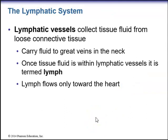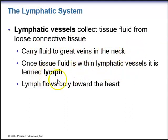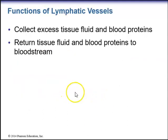Lymphatic vessels collect tissue fluid from loose connective tissue. These vessels carry fluid to the great veins in the neck. Once tissue fluid is within the lymphatic vessels, it is termed lymph. Lymph flows only towards the heart. Functions of lymphatic vessels are to collect excess tissue fluid and blood proteins and return them to the bloodstream.